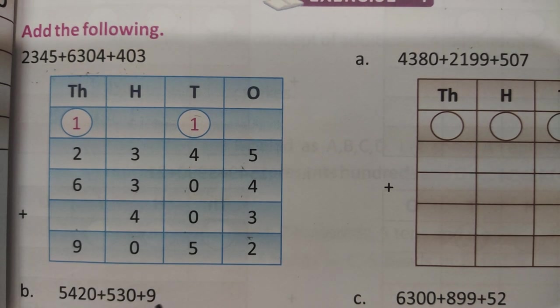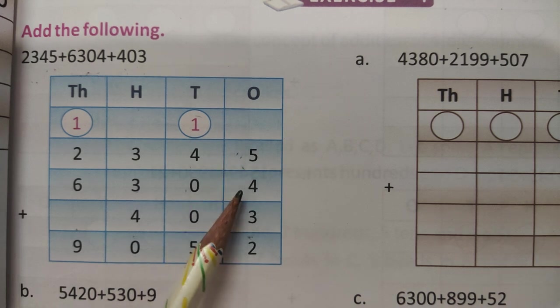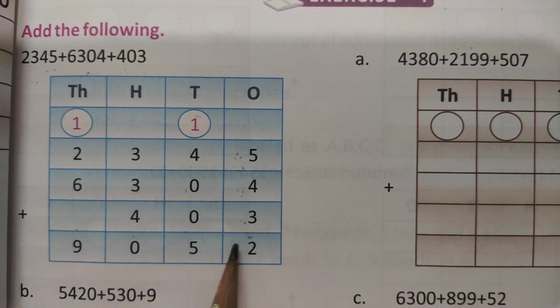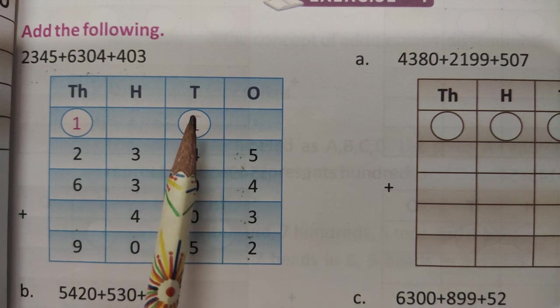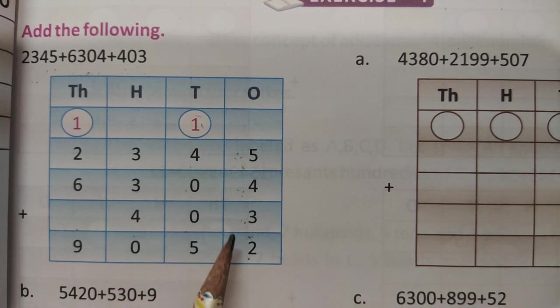Look at the book all of. Count the number: 5, 4, 3. Add this, 5 and 4 is 9, 9 and 3 is 12. So 2 is 1 place and 1 is carry over 10 place. Is that clear?